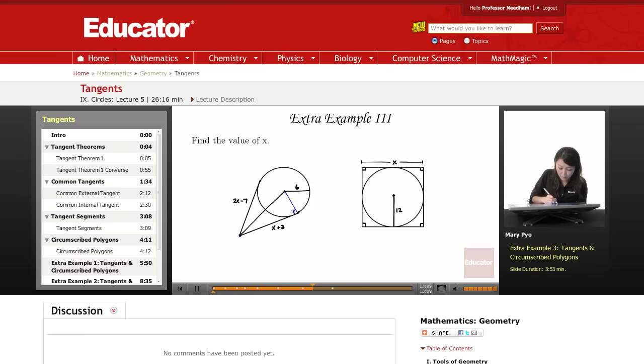And then this radius will have a measure of 6, and then you can just work with that there. Okay, but for this problem, we don't need that. So here, we just need to make these tangents equal to each other. So it's going to be 2x minus 7 equals x plus 3.